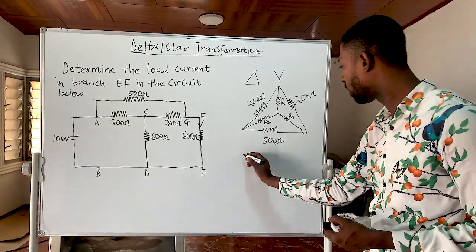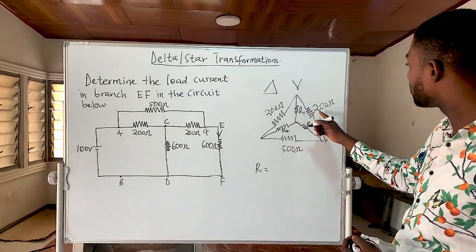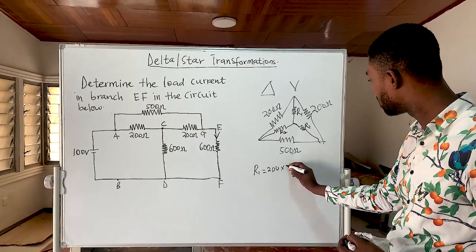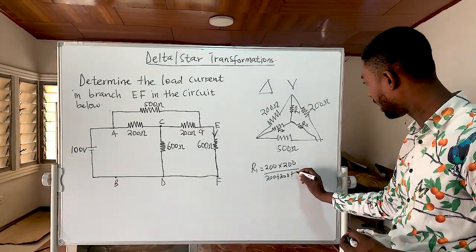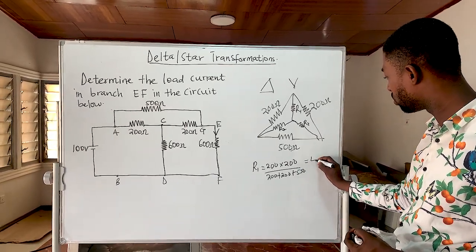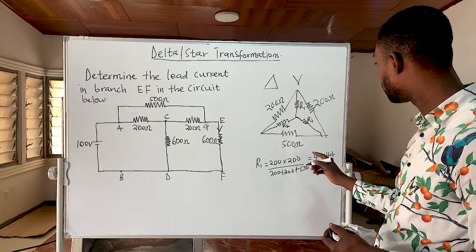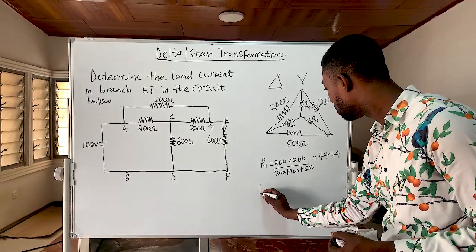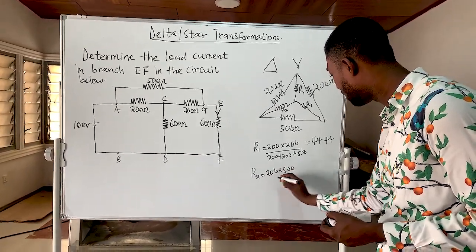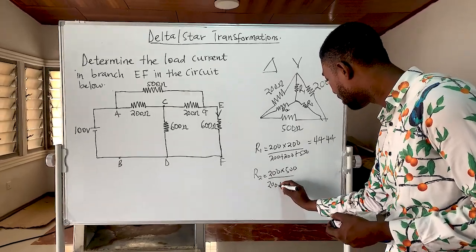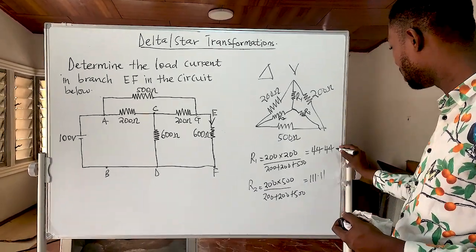To calculate R1: R1 equals the product of the adjacent resistors, which is 200 times 200, all over 200 plus 200 plus 500. R1 equals 44.44 ohms. To calculate R2: R2 equals 200 times 500, all over 200 plus 200 plus 500, which equals 111.11 ohms.